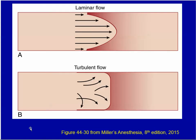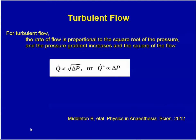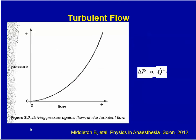This diagram compares the nature of laminar flow with turbulent flow. For turbulent flow, the flow rate is proportional to the square root of pressure, and hence the pressure gradient increases as the square of the flow, as illustrated by this diagram — unlike laminar flow, where it's linear.